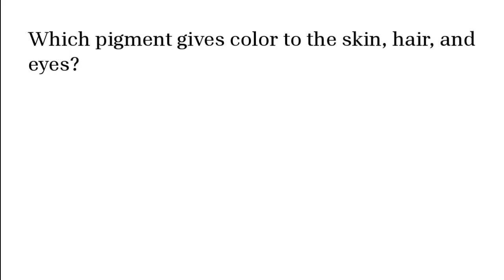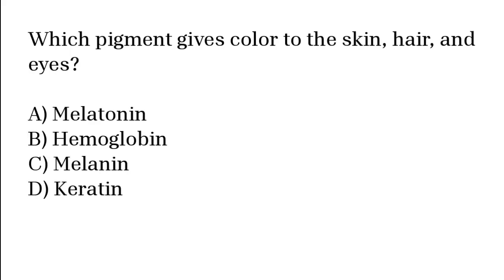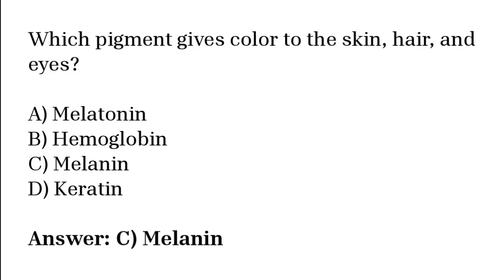Which pigment gives color to the skin, hair and eyes? Melatonin, Hemoglobin, Melanin, Keratin. The correct answer is option C. Melanin pigment gives color to the skin, hair and eyes.